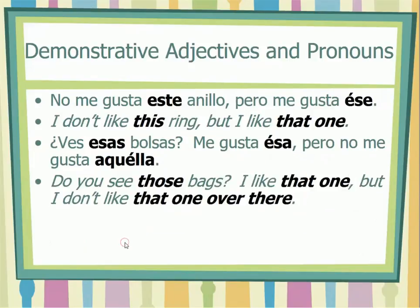So, let's see: No me gusta este anillo, pero me gusta ese. In the past, we used to put an accent mark on ese. Ese means 'that one.' In English, that demonstrative pronoun uses the word 'one,' but in Spanish you use it the same way as a demonstrative adjective. Remember, adding the accent mark is an old rule — we are not going to add the accent mark.